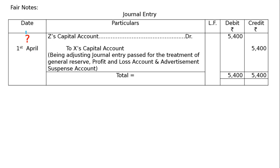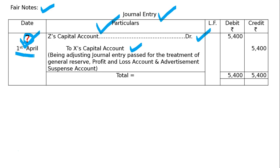Go to the next page and write a fair note. Make a proper journal entry format. Put a question mark in the date column because the year is given in the question — you can take the year from the book and write it. Z's capital account is debited to X's capital account. Being: adjusting journal entry passed for the treatment of General Reserve, Profit and Loss Account, and Advertisement Suspense Account.